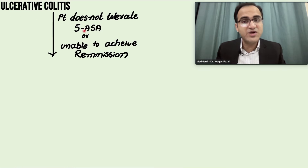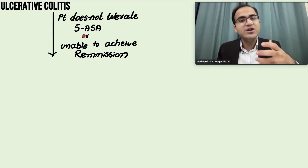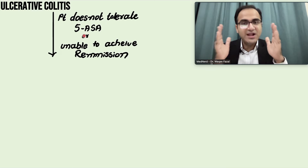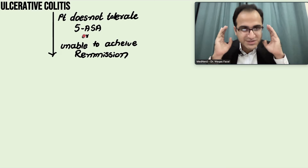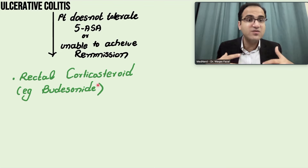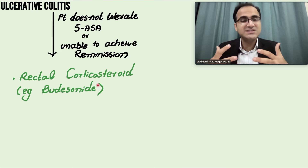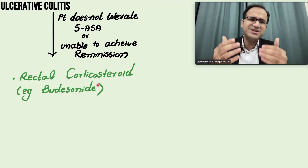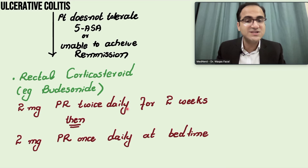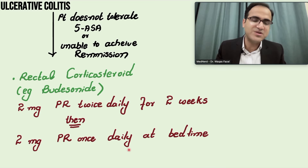If the patient does not tolerate mesalamine or if you are unable to achieve remission with mesalamine in mild to moderate cases, give rectal corticosteroids. Because systemic corticosteroids have many side effects, you do not prefer them initially. Start with rectal budesonide: 2 mg per rectum twice daily for 2 weeks, then 2 mg per rectum once daily, tapering the dose.